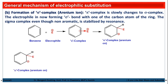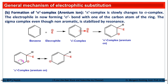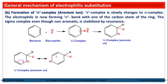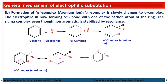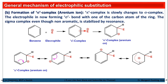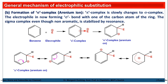The sigma complex — that is, the arenium ion — is in conjugation with adjacent pi bonds. The pi bond breaks, the positive charge is neutralized at one position but a new positive charge develops at another carbon, giving another resonating structure. Similarly, this process continues so that the positive character is transferred from one carbon to another by resonance. As the number of resonating structures increases, the stability of the species increases. Thus the sigma complex — the arenium ion — is stabilized by resonance.